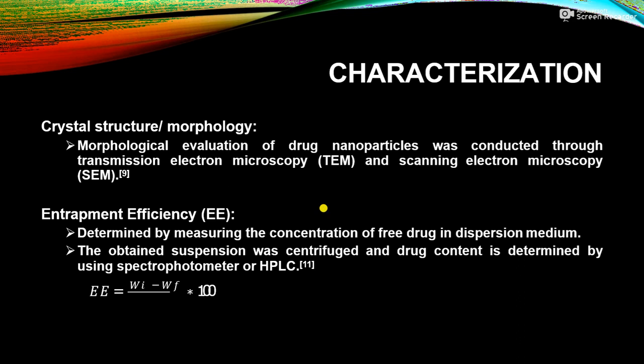Next is crystal structure and morphology. In the characterization process, we can also find out the morphological characteristics — the morphological evaluation of drug nanoparticles — which is conducted through transmission electron microscopy (TEM) and scanning electron microscopy (SEM). These techniques are used to determine the crystallinity, crystal structure, or morphology of drug nanoparticles.